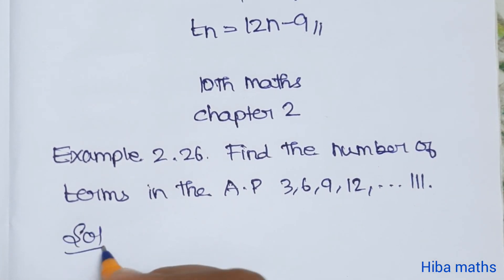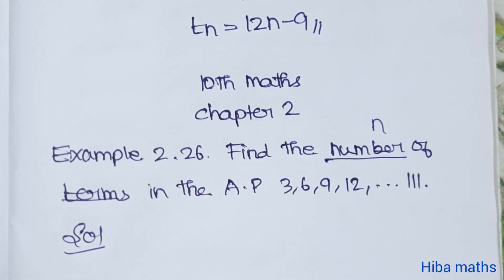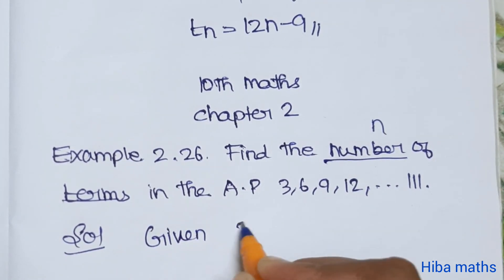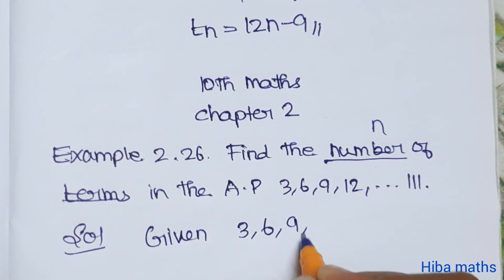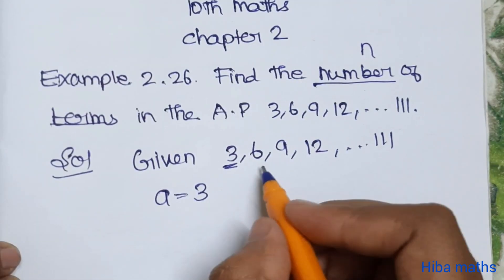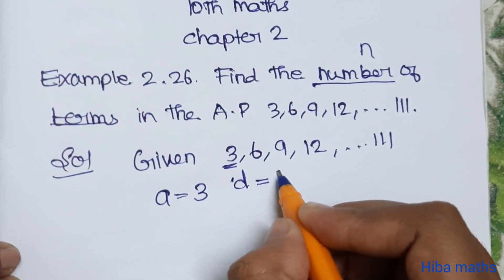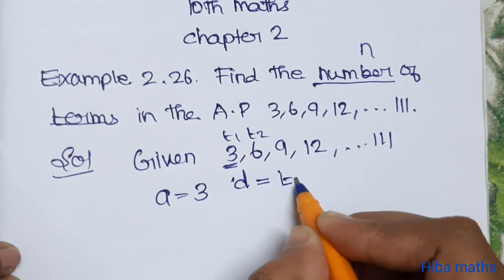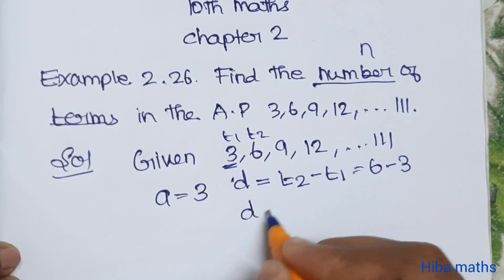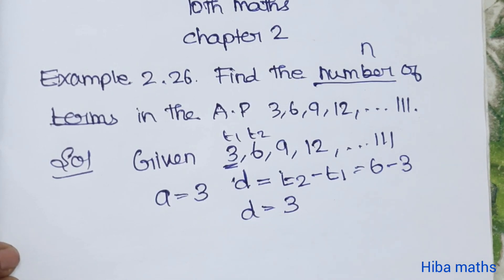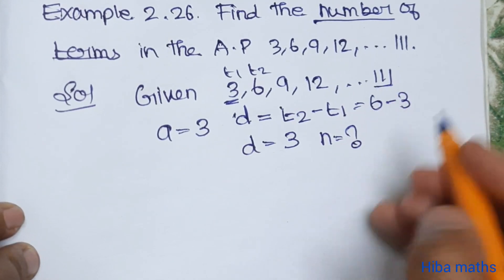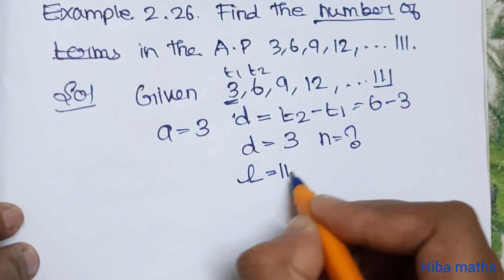So, what is the number of terms? The first term a is 3. The common difference d is t2 minus t1, that is 6 minus 3, which equals 3. a is 3, d is 3, we need to find n, and the last term l is 111.